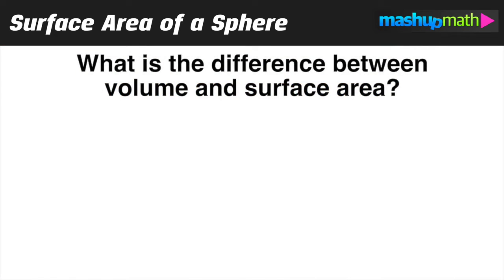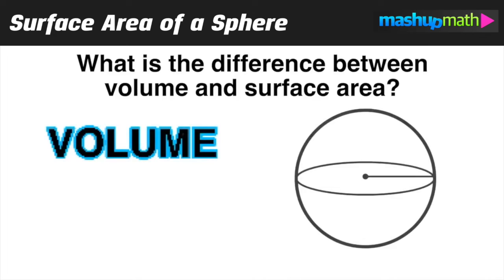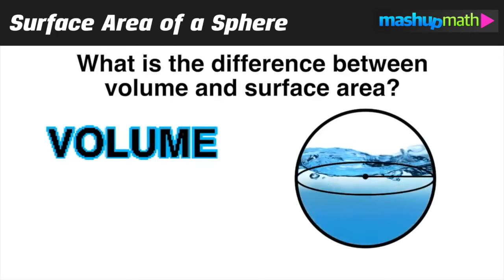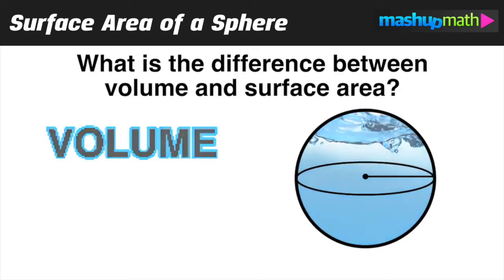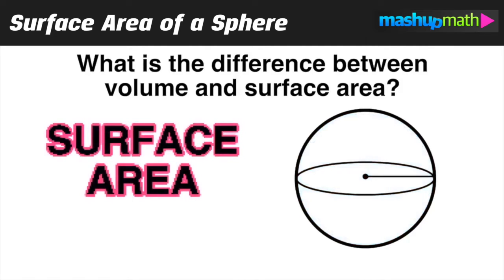Let's go ahead and ask the question: what is the difference between volume and surface area? The volume of a sphere refers to how much room is inside of it — imagine that we wanted to fill it up with water completely. Surface area refers to the outside, as if we wanted to know how much space to cover the entire outside of the sphere, like if we wanted to spray paint the entire thing orange.